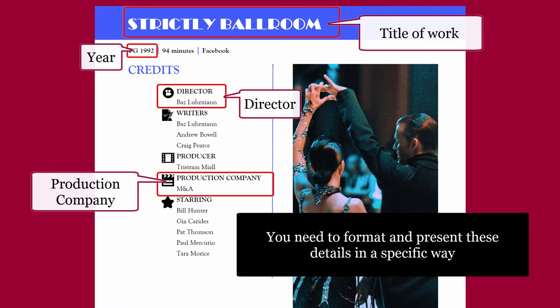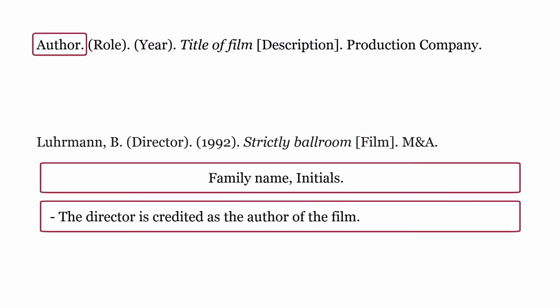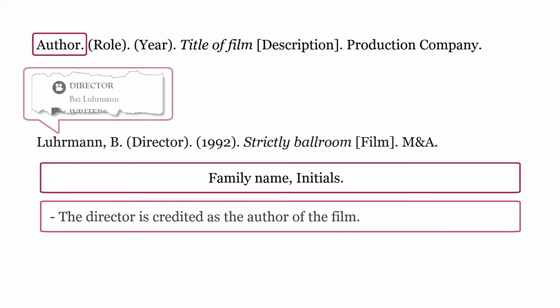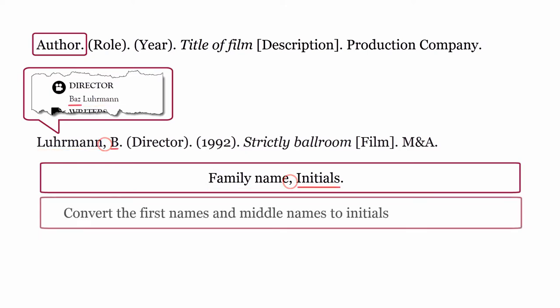You need to format and present these details in a specific way. For the author, usually the director is credited as the author of the film. The author is formatted using the family name, followed by a comma, then convert the first names and middle names to initials, and include a full stop after each initial.